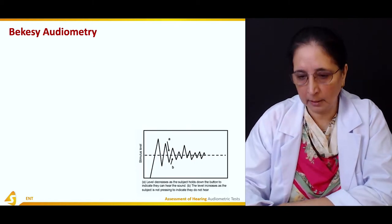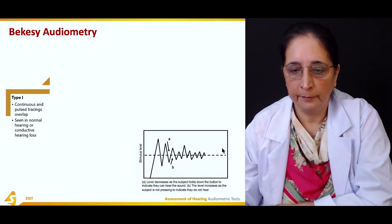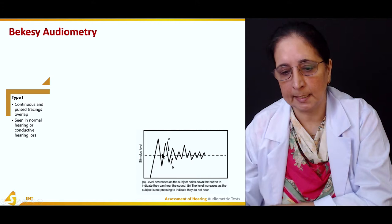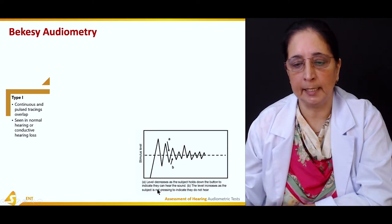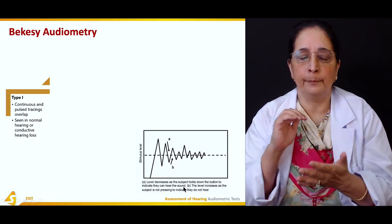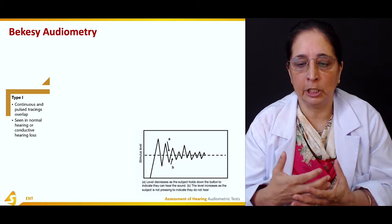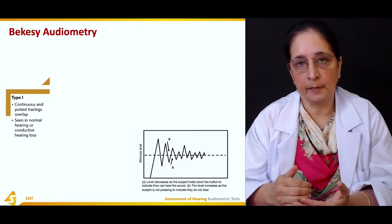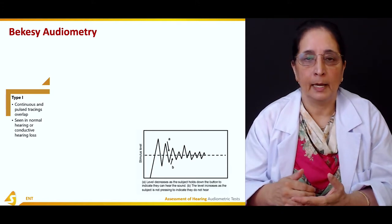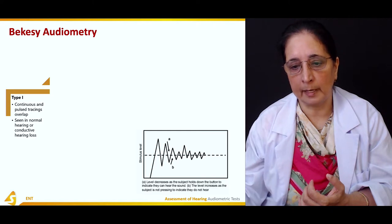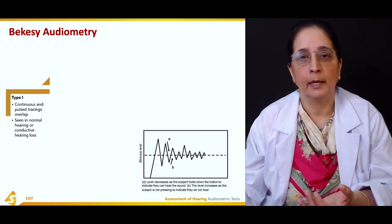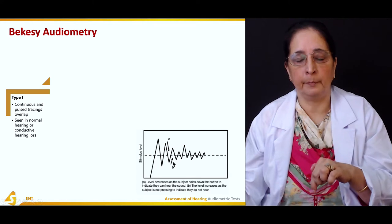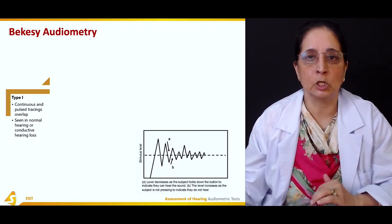In Bekesy (VEXI) audiometry, the stimulus level is the baseline. When the patient presses the button to indicate they can hear the sound, the level decreases. When the button is not pressed — meaning they cannot hear — the level increases. So, decreased level corresponds to button pressed, and increased level corresponds to button not pressed.